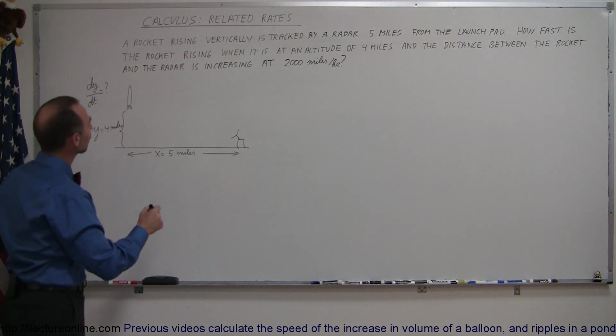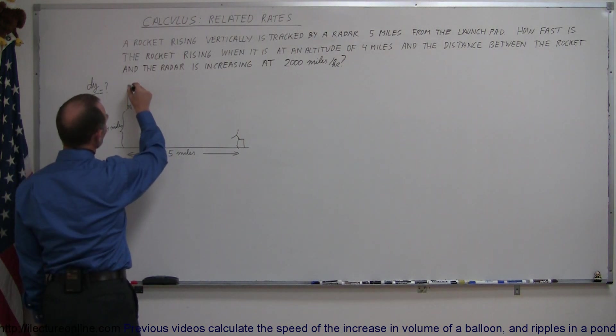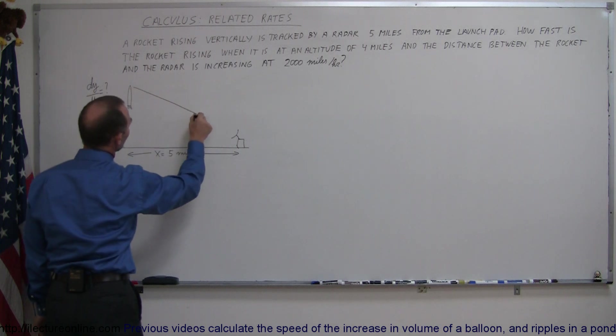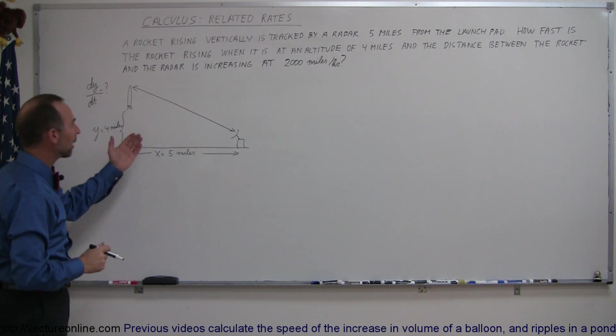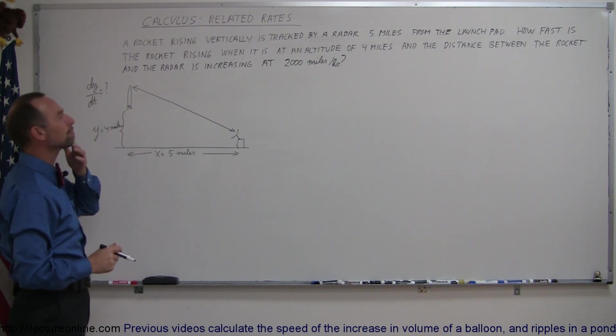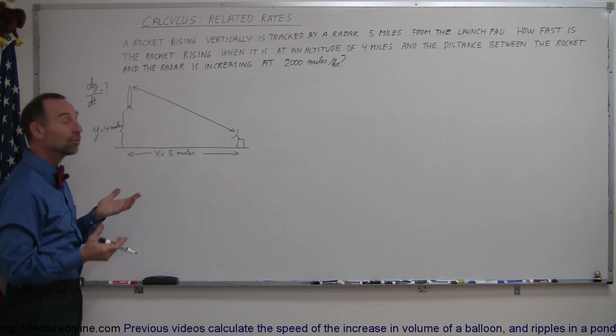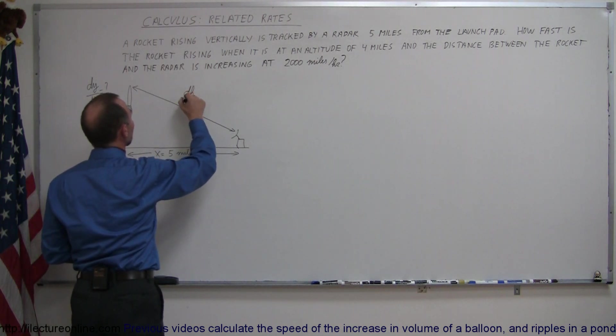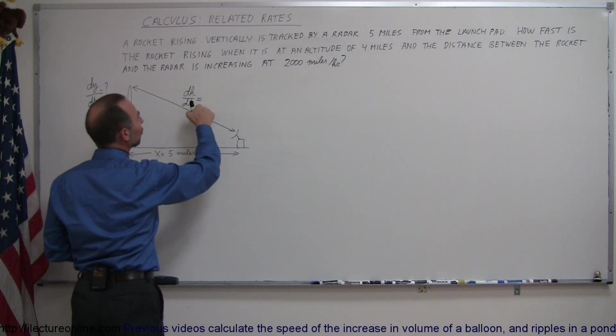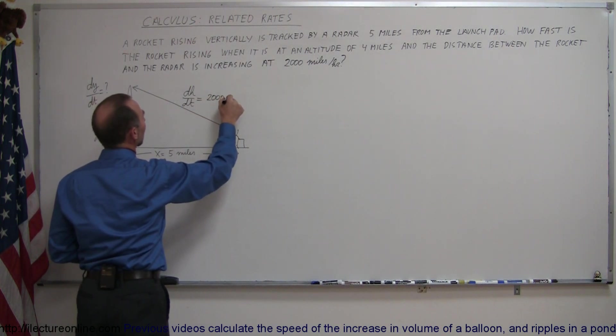And then they're telling us that the distance between the rocket and the radar, this distance right here is changing over time. So that's the hypotenuse, right? We need a letter for the hypotenuse. How about h? How about the dh dt? The distance in the hypotenuse with respect to time is changing at the rate of 2,000 miles per hour.